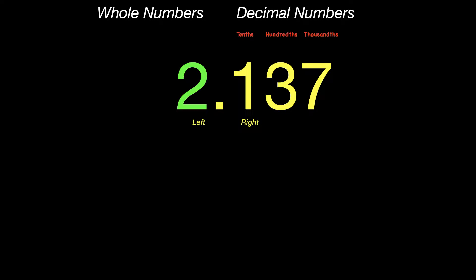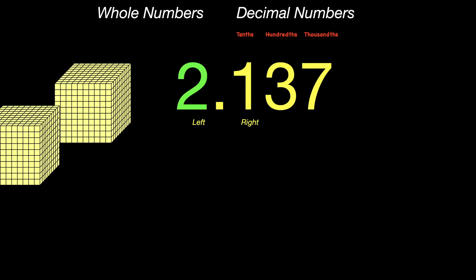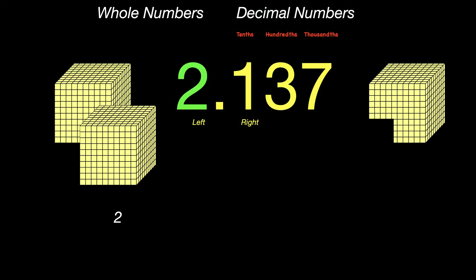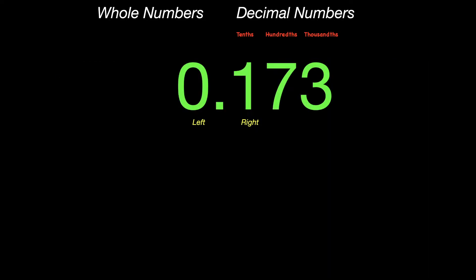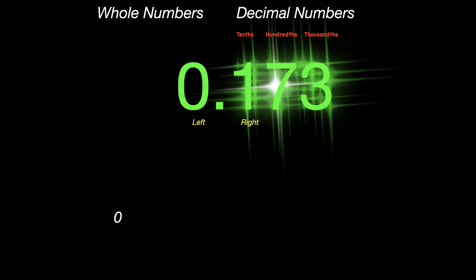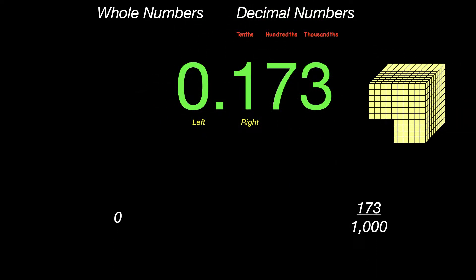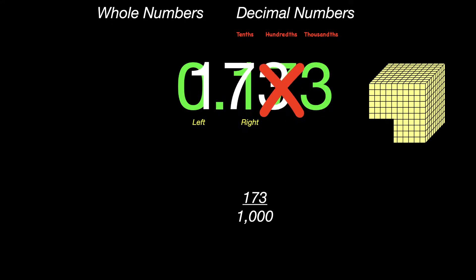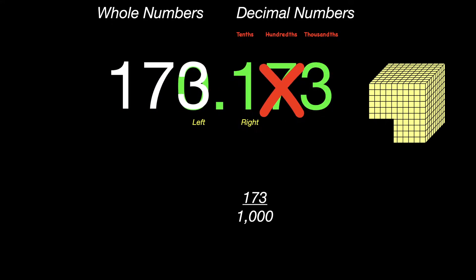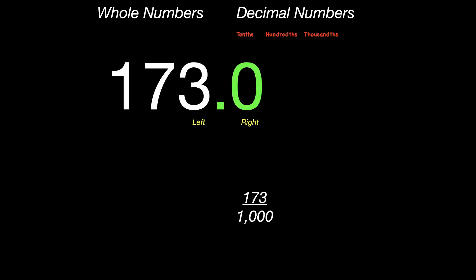This number is 2 and 137 thousandths. The 2 is your whole number on the left side, and the 137 is the fraction 137 thousandths. This is simply 173 thousandths because there are no numbers on the left, and the fraction 173 on the right side out of a thousand — 173 thousandths. Sometimes the mistake is to read it as just 173, but keep in mind that to be 173 it would have to be on the left side of your decimal point, because it would be a whole number.